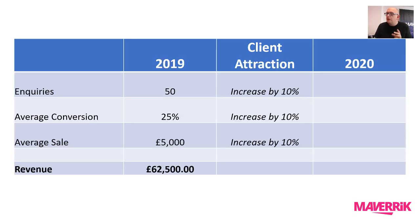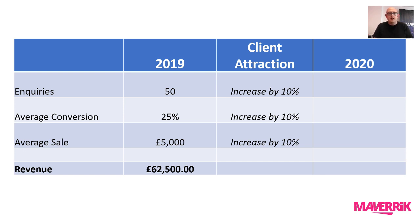So here is an example of a business — let's call it Joe's Video Production Company. In 2019, they had 50 inquiries. Their conversion of those inquiries was 25%, and their average sale value was £5,000. So their total revenue from the successful inquiries was £62,500.